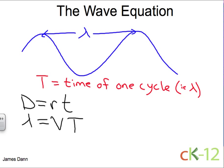Now, if we divide both sides by the period, this cancels, and then we have the speed equals one over the period times the wavelength.